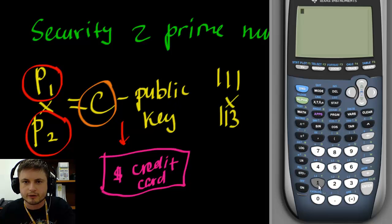So here's my TI-84 Plus and I'm going to use the normal calculator function and cross multiply these two numbers which will give me a larger number. So it's 12,543. Now that's not a prime number and we can check that by doing the following.